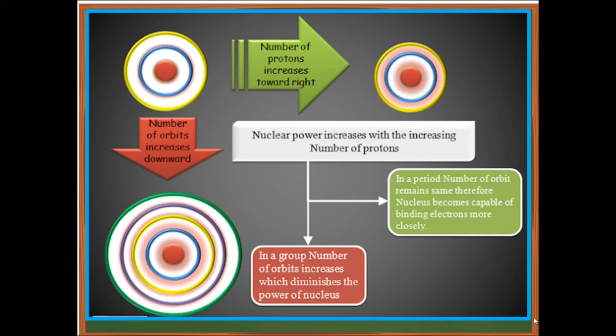As you move from top to bottom, within a group, number of orbits increases downwards. Nuclear power increases with the increasing number of protons. Therefore, we can say in a period, the number of orbits remains the same. Therefore, the nucleus becomes capable of binding electrons more closely.